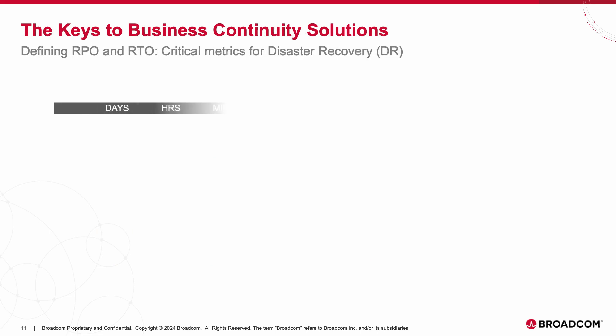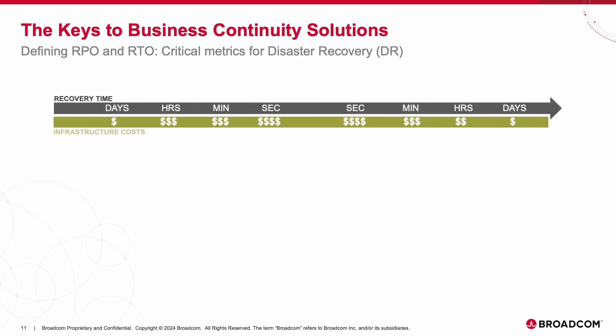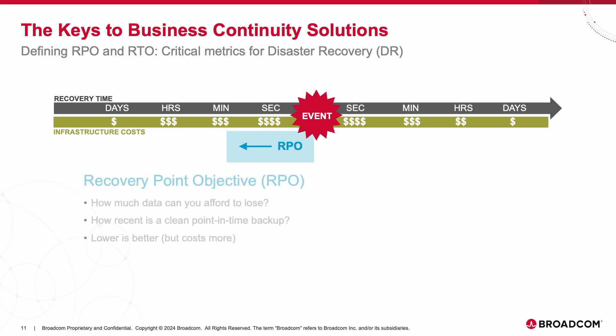Let's envision a simplified timeline to explore RPO and RTO. Initially, everything is operating smoothly without any major issues. Although not depicted here, your IT solutions ideally perform regular backups or synchronized copies throughout this timeline. Suddenly, an unforeseen event occurs, causing your systems to go offline and resulting in a service outage. RPO denotes the amount of data a business can afford to lose, determined through its Business Impact Analysis, or BIA. It represents how recent a clean, non-infected, point-in-time copy or backup is.